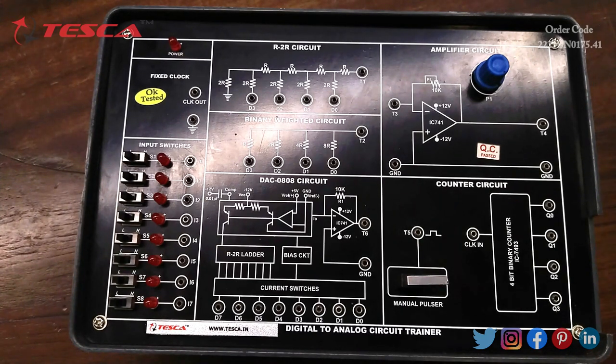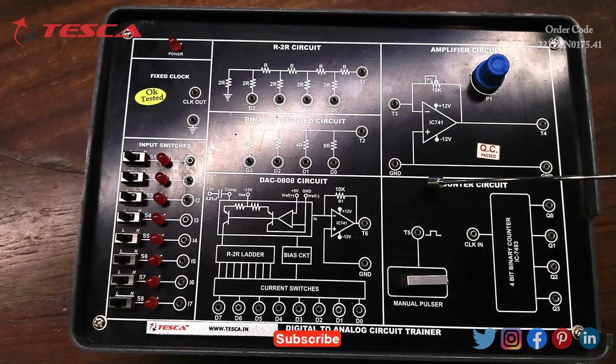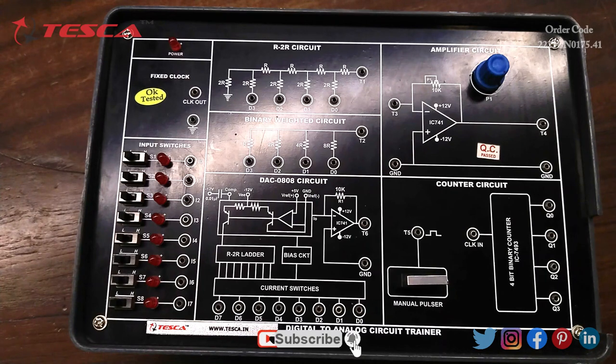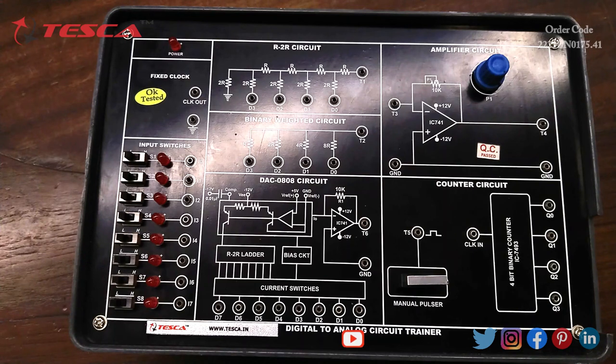Then we have the next section of counter circuit. This is 4-bit binary counter provided using IC7493. Clock is provided to the circuit through clock-in post. Output obtained Q3, Q2, Q1 and Q0 is either connected to the R2R circuit or binary weighted circuit.